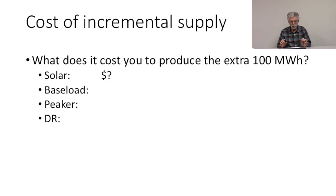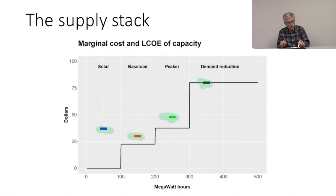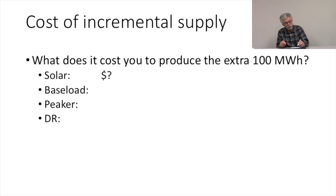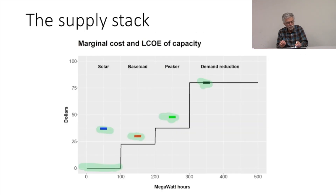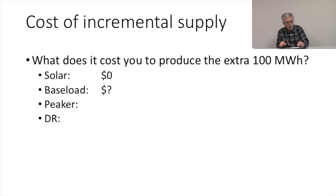What does it cost you to produce an extra 100 megawatt hours with your solar plant? If we look at the marginal cost for solar, we see that's zero. So I can produce 100 megawatt hours of solar for zero cost. How much does it cost to produce 100 megawatt hours of baseload? We look at our marginal cost for our baseload plant, and that's 22.50. So the cost of 100 megawatt hours of baseload is 22.50 times 100 megawatts, or $2,250.